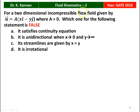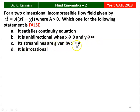Next question from the 2018 Question Paper: for a two-dimensional incompressible flow field given by u⃗ = a(xî − yĵ), where a > 0, which one of the following statements is false? Statements: (A) it satisfies the continuity equation, (B) it is unidirectional when x→0 and y→∞, (C) its streamlines are given by x = y, (D) it is irrotational. The correct (false) statement is C: streamlines given by x = y.